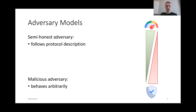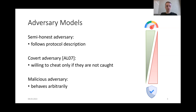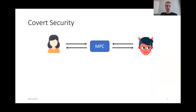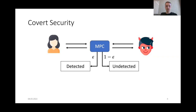As a middle ground between efficiency and security, Aumann and Lindl proposed security against covert adversaries. This type of adversary may deviate arbitrarily from the protocol description, but is only willing to cheat if it's not getting caught. A covertly secure protocol needs to guarantee that if there is some malicious party that cheats in the protocol execution, then with a fixed probability called the deterrence factor epsilon, this cheating will be detected. With probability 1 minus epsilon, cheating will be undetected.